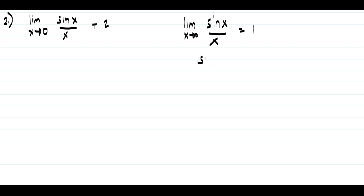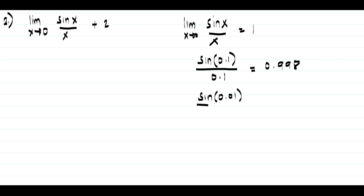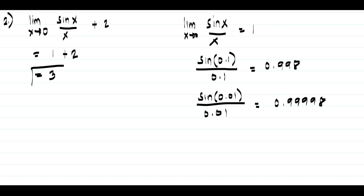For example, if we evaluate sine(0.1) divided by 0.1, that gives 0.998. And sine(0.01) divided by 0.01 gives 0.9998. As the value of x approaches 0, the value of the function approaches 1. So the limit of sine x over x as x approaches 0 is 1. This gives us 1 plus 2, and that is 3.